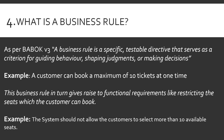Question number four: what is a business rule? This is a question where most people get it wrong. As per BABOK version three, a business rule is a specific, testable directive that serves as a criterion for guiding behavior, shaping judgments, or making decisions. Simply put, it is a criterion or constraint which has to be followed by the solution or system being built. For example, XYZ Cinemas had a business rule that a customer can book only up to a maximum of 10 tickets at a single time, which ensures plenty of tickets are available for everyone.